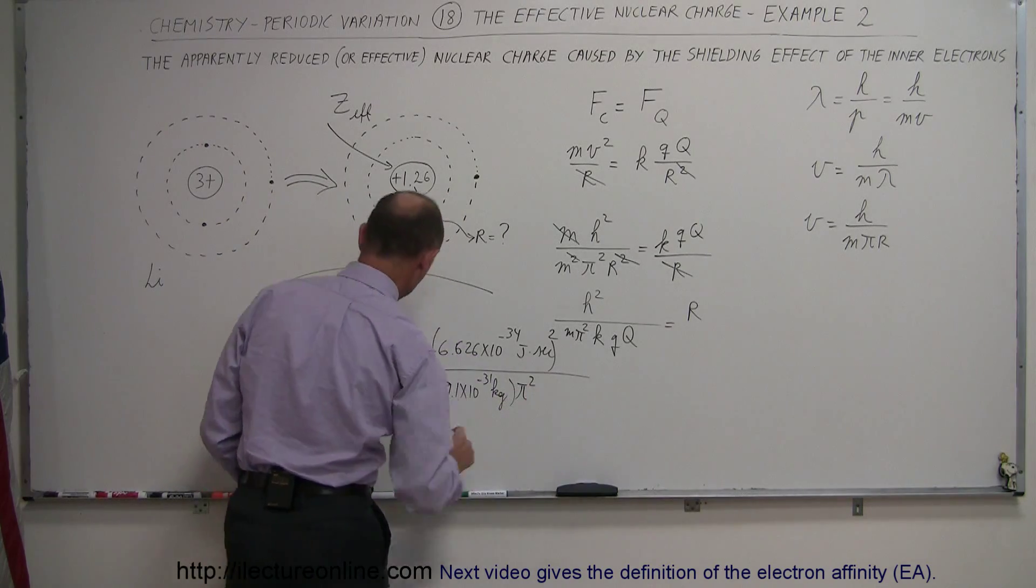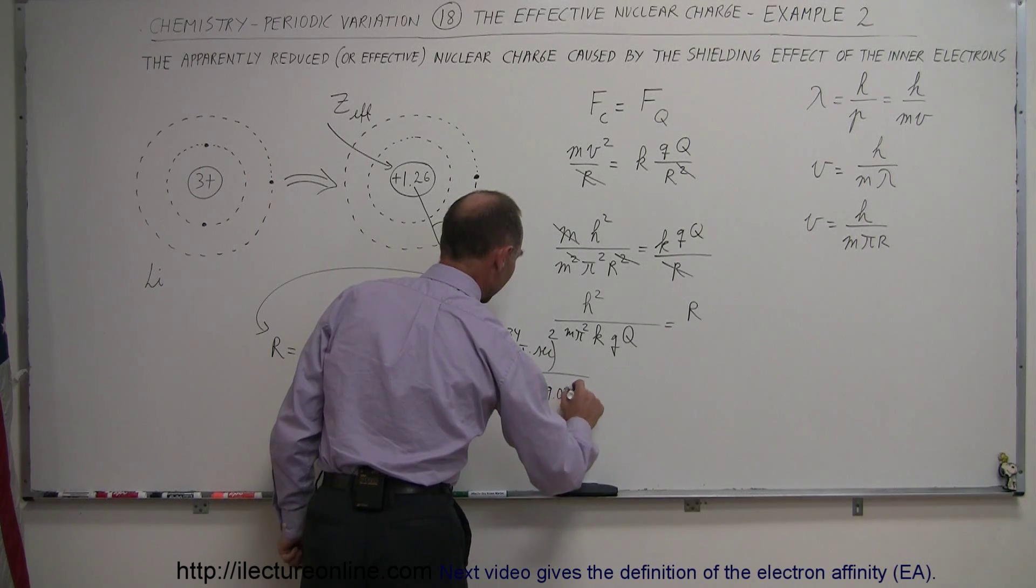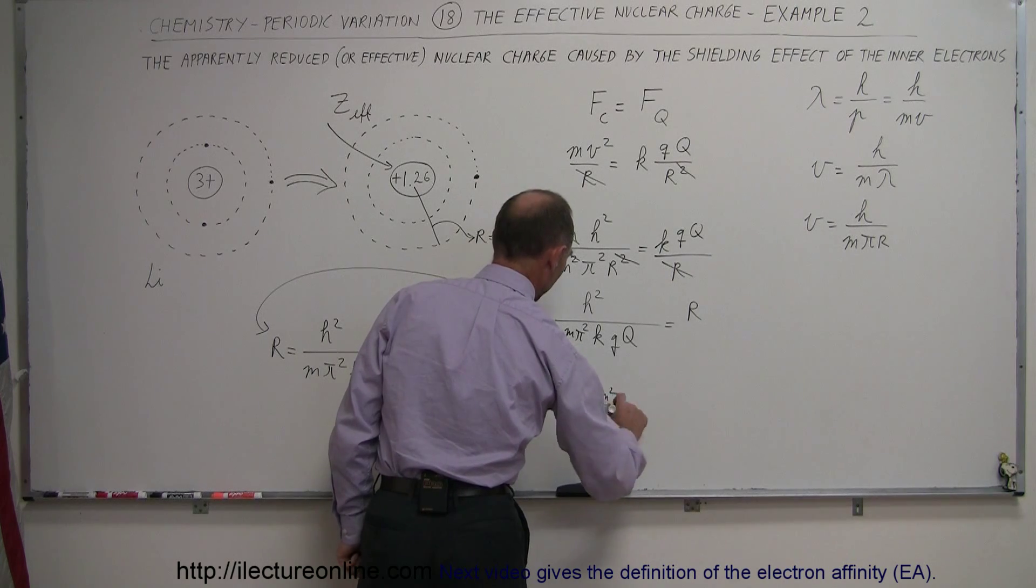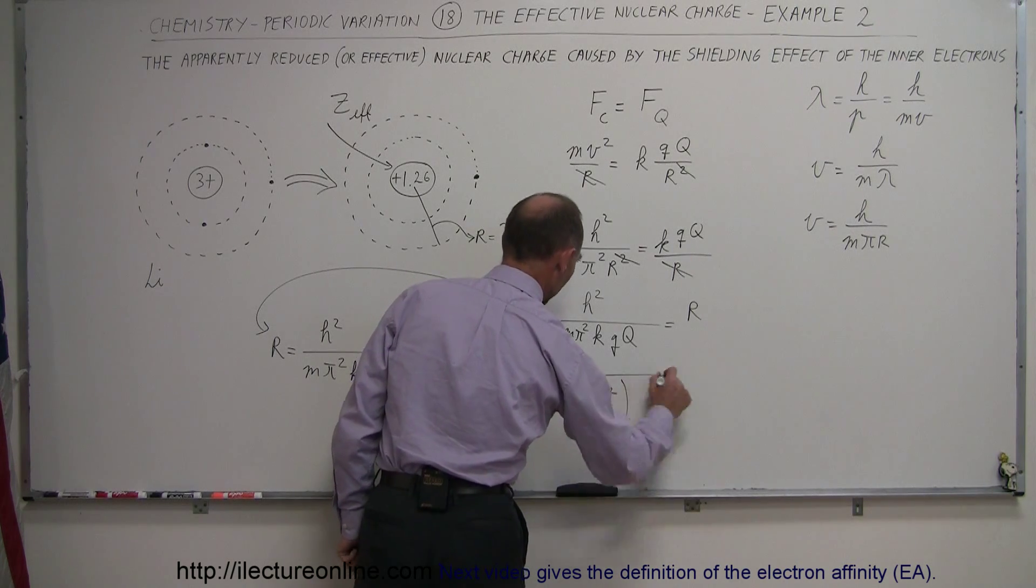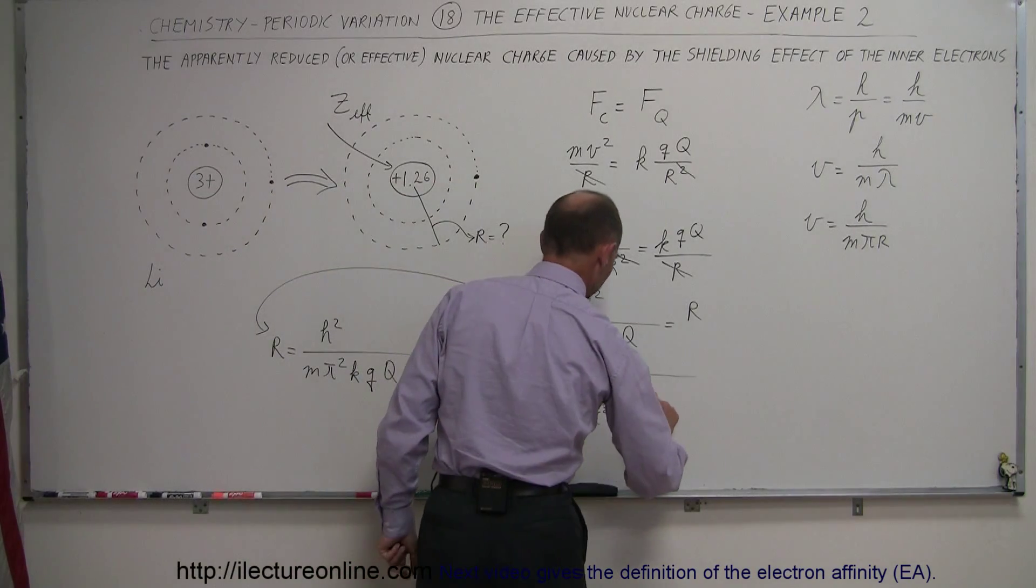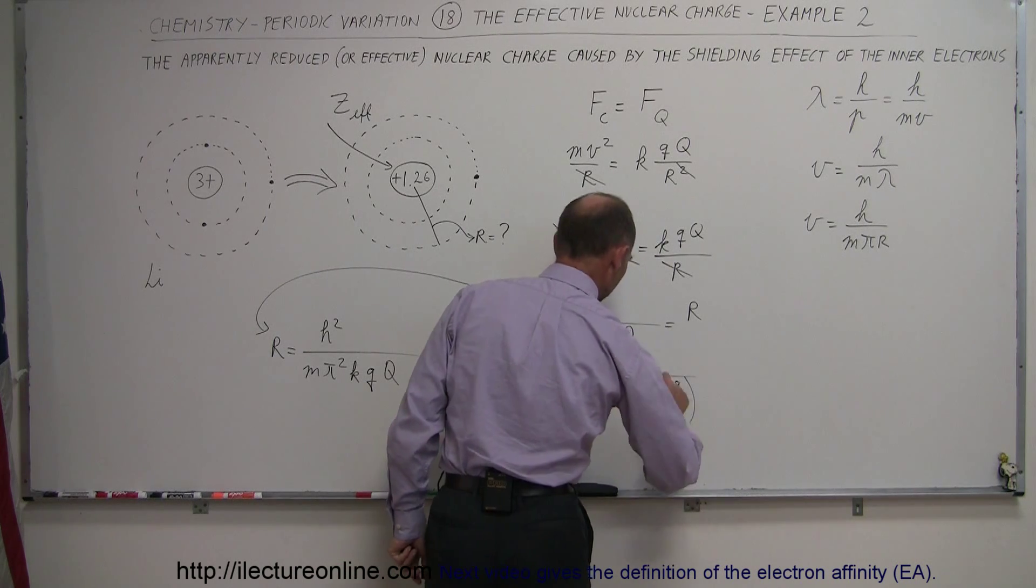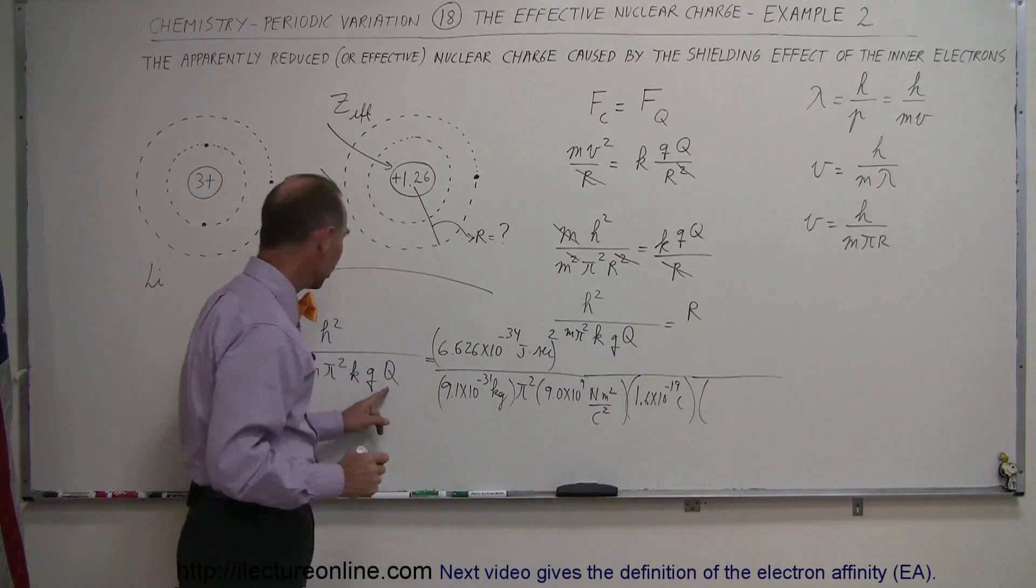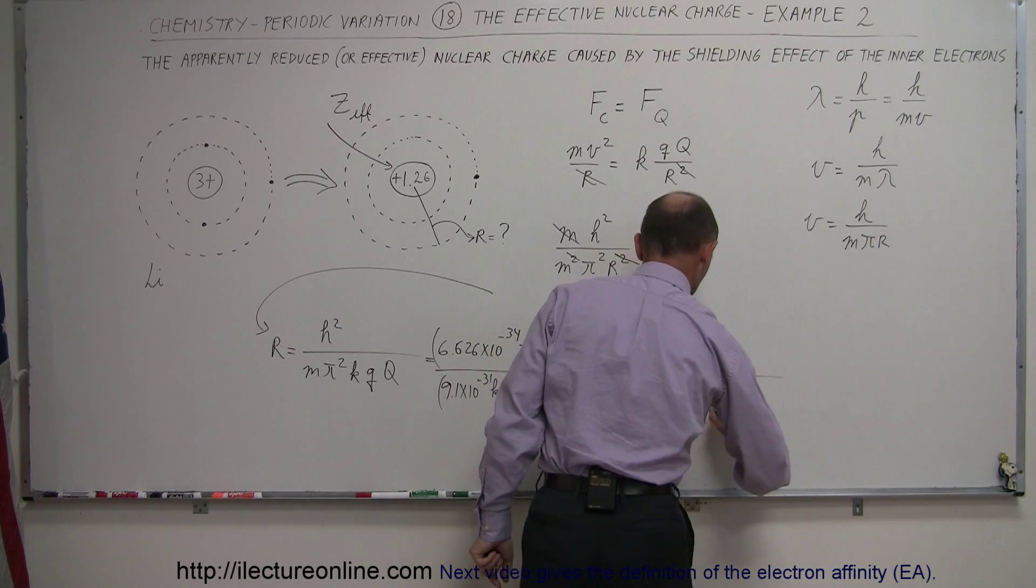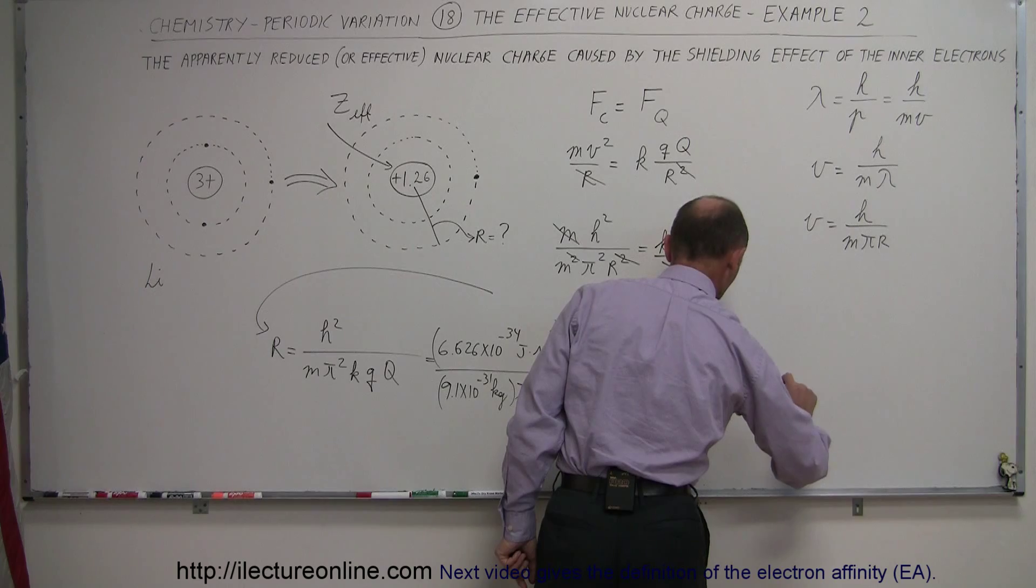Times k, k is 9.0 times 10 to the ninth, that would be newtons meters squared per coulomb squared, coulombs is a unit of charge, divided by the charge of electron, which is 1.6 times 10 to the minus 19 coulombs, and then the charge of the effective charge of the nucleus, which would be 1.26 times that amount, so it would be 1.26 times 1.6 times 10 to the minus 19 coulombs.